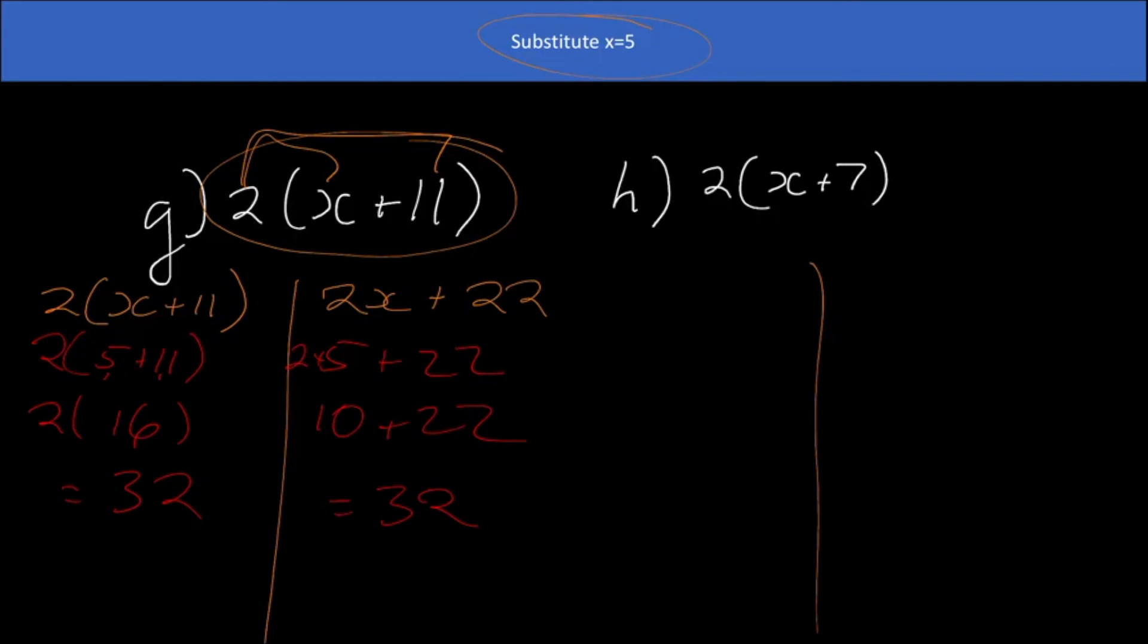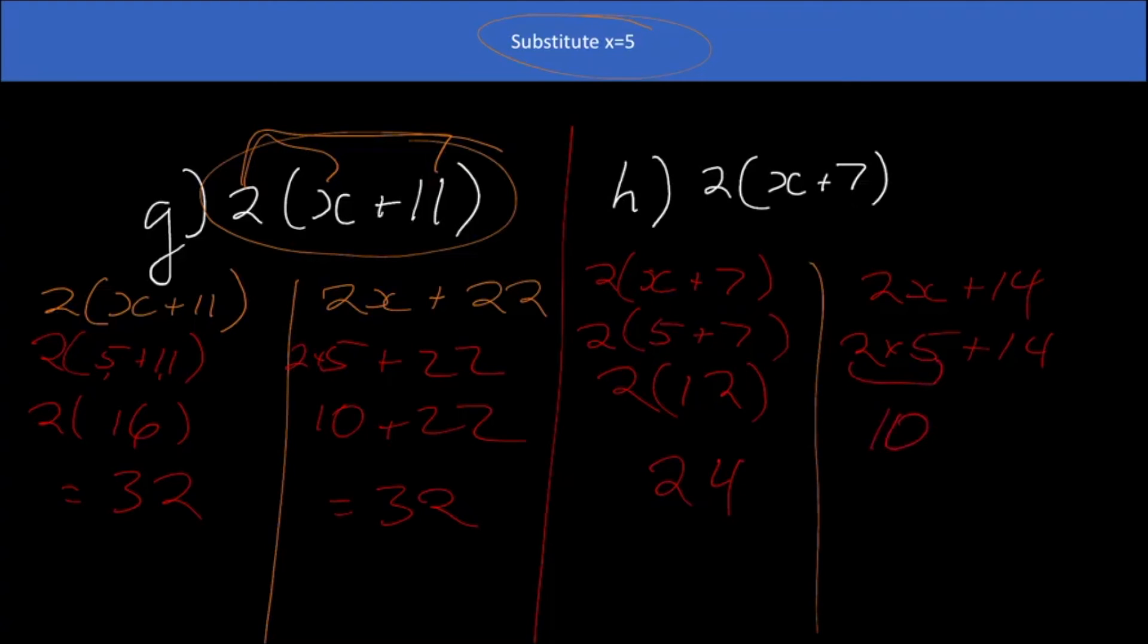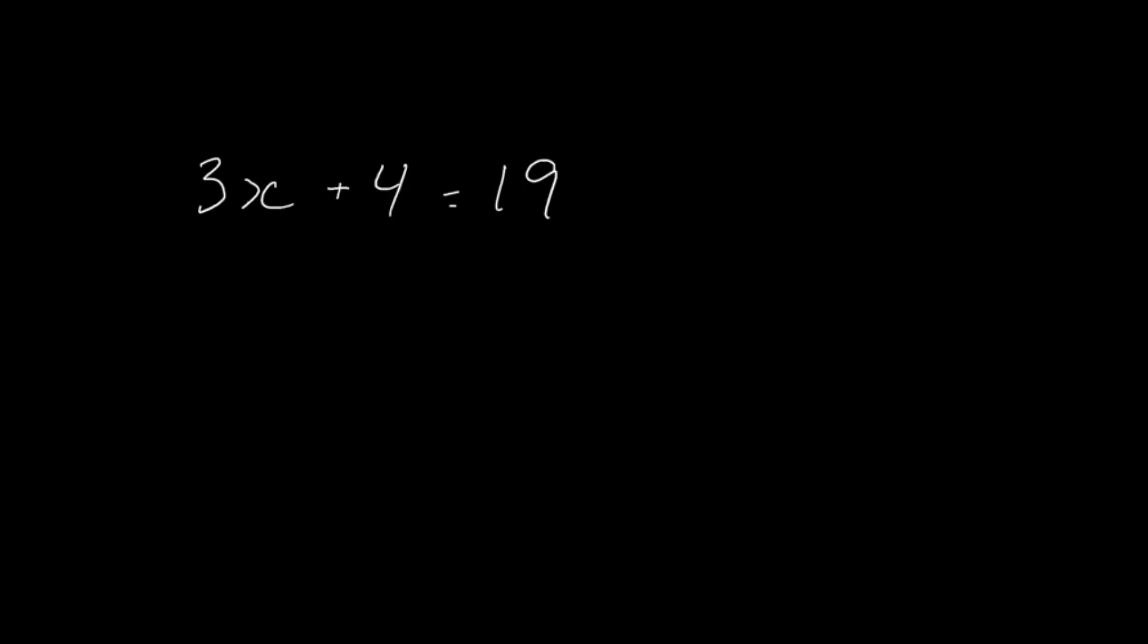And now I'm going to sub, 2 times 5 is going to be 10, and that's plus 22, and that's going to be 32. So they come up with the same answer, so that's a good way to check yourself as well. All right, over here I have 2x plus 7, and then over here I'm going to have 2x plus 14. And now I'm going to sub in my 5. Okay, so this is going to be 12 times 2, which is going to be 24, and then here I have 10 plus 14, and that is going to be 24.